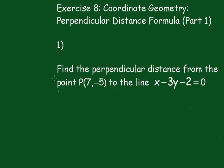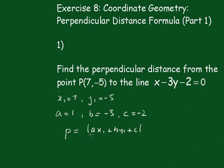You should have written down that x1 equals 7, y1 equals -5, a equals 1, b equals -3, and c equals -2. And the formula was ax1 plus by1 plus c, all over the square root of a squared plus b squared.